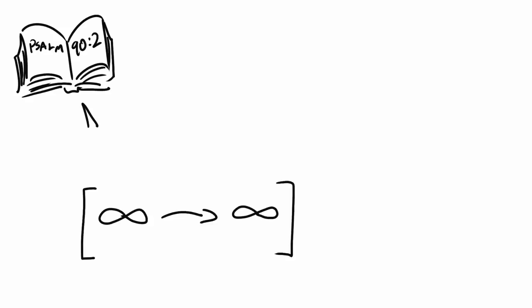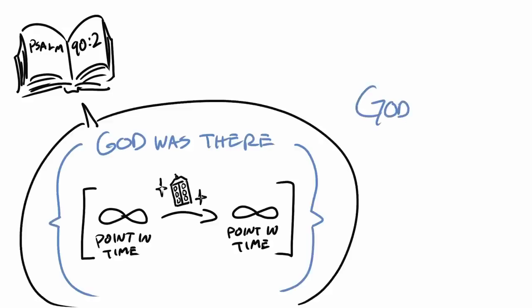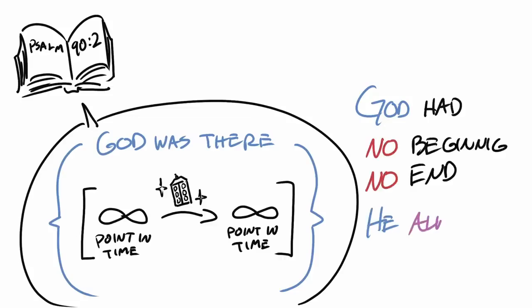Notice how it says from everlasting to everlasting. What the author of this psalm is saying is that if you start from this infinite period of time here and travel to this infinite period of time over here, God was always there. He had no beginning and has no end. He always was, always is, and always will be.